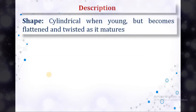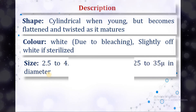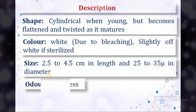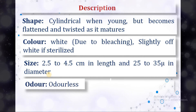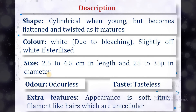Cotton is cylindrical when young but becomes flattened and twisted as it matures. The color is white or slightly off-white if sterilized. It is 2.5 to 4.5 cm in length and 25 to 35 microns in diameter. It is odorless and tasteless, with an appearance of soft, fine, filament-like hairs which are unicellular.